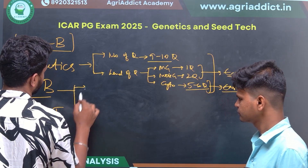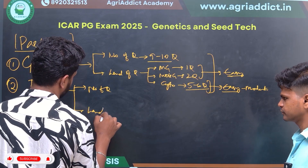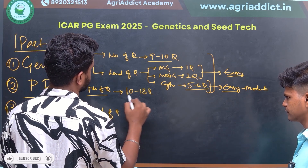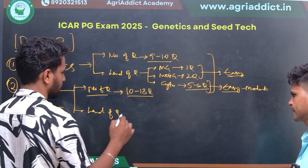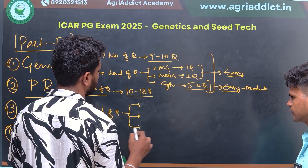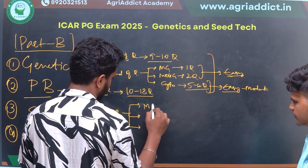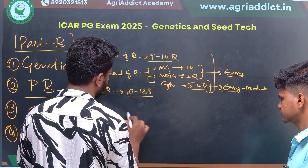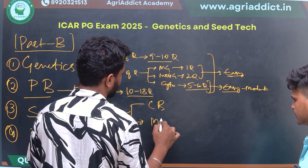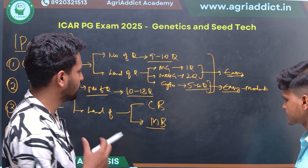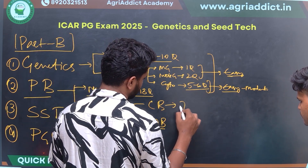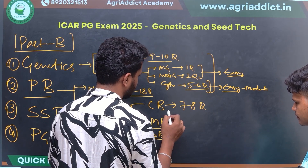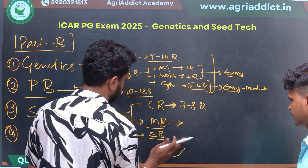Moving on to Plant Breeding — number of questions and level. Approximately 10 to 13 questions came from the whole Plant Breeding section. We can differentiate into two parts: Conventional Breeding and Molecular Breeding. From Conventional Breeding, about 7 to 8 questions came, with one additional question from Stress Breeding included within that category.